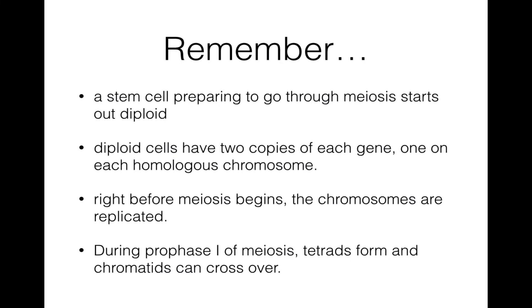Right before meiosis begins, the chromosomes are replicated, which means each chromosome is then made up of two identical sister chromatids. And finally, during prophase I of meiosis, tetrads form, and chromatids that are really close together, that are not homologous to each other, can cross over, which means they can trade their tips.